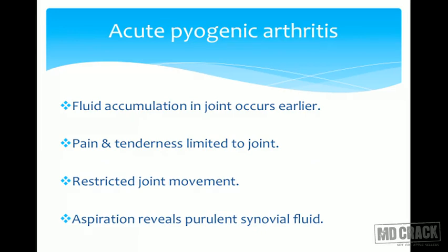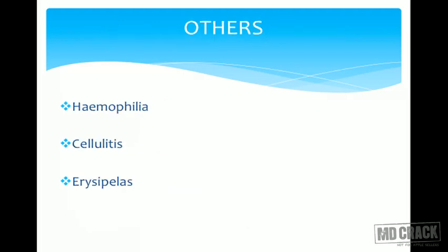Acute pyogenic arthritis is another differential diagnosis. In this condition, fluid accumulation in the joint occurs much earlier. Unlike acute osteomyelitis, the pain and tenderness is limited to the joint — whichever joint is affected — with significant restriction of joint movement. Aspiration reveals purulent synovial fluid in acute pyogenic arthritis. Other differentials to keep in mind include hemophilia, cellulitis, and erysipelas.